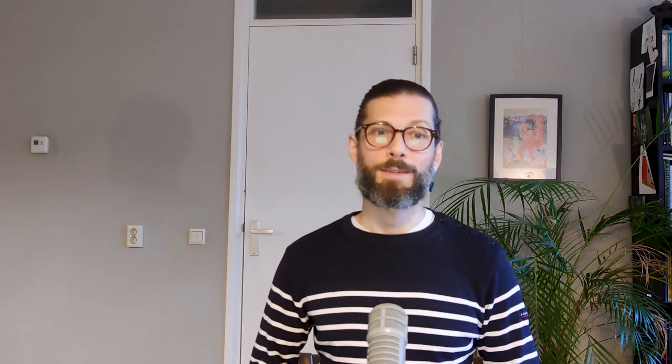Of course, there are also downsides. One downside is that participants might experience what are called order effects — the order in which conditions are presented might affect their reported outcomes. Even more problematic are differential order effects, where the order effect differs across different orderings. For example, if you first give people an experimental drug and then a placebo, they're likely to notice the sugar pill has no effect and report much more negatively than if they had first had the placebo, experienced its placebo effect, and then experienced the additional benefit of the true drug.